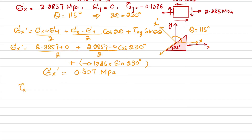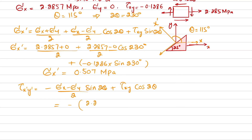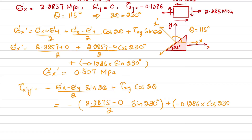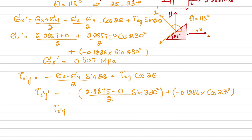For the transformed shear stress: τX'Y' = −(σX − σY)/2 · sin(2θ) + τXY · cos(2θ). Substituting: τX'Y' = −(2.2857/2)·sin(230°) + (−0.1286)·cos(230°) = 0.958 MPa.